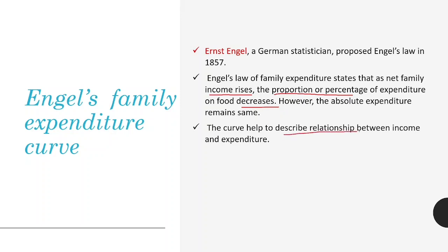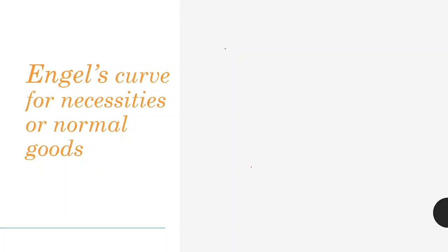There are two types of Engel's curve: first is Engel's Family Expenditure Curve, and second is Engel's Family Consumption Curve. Today we are going to discuss Engel's Family Expenditure Curve, which we have to study for your exam. We will discuss Engel's curve for four types of goods: first, normal or necessary goods; second, luxury goods; third, inferior goods; and fourth, neutral goods.